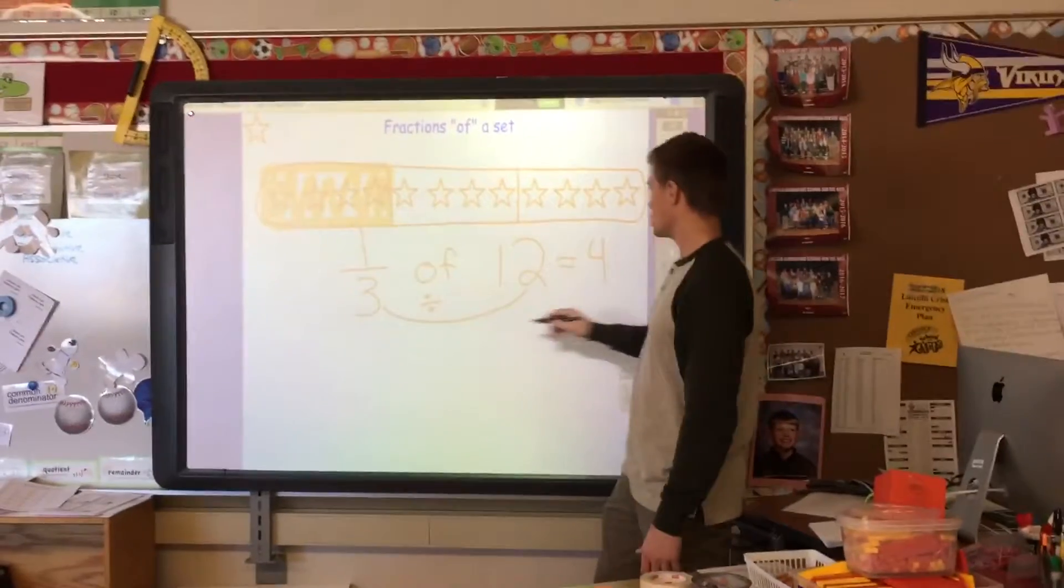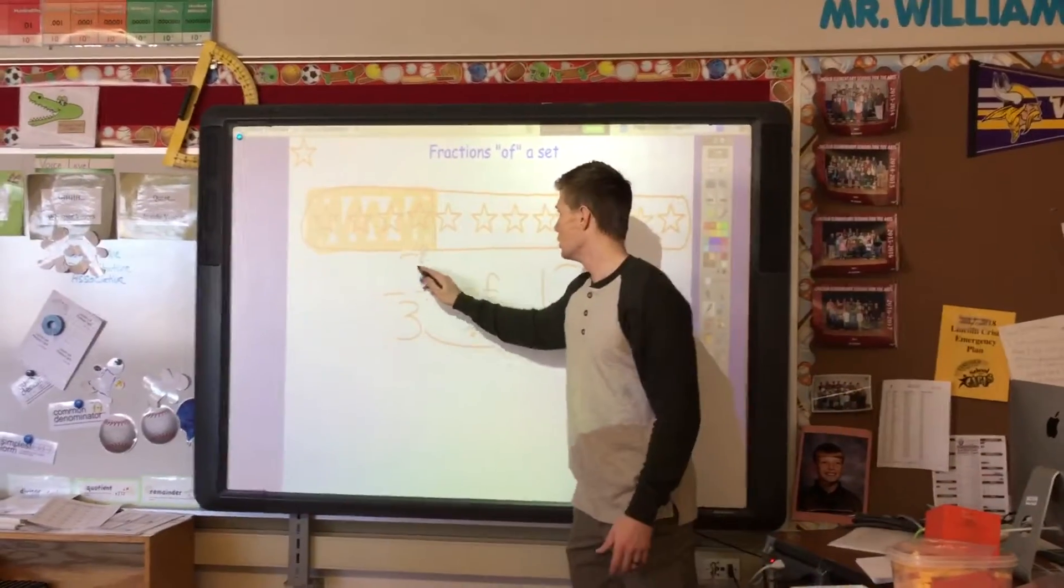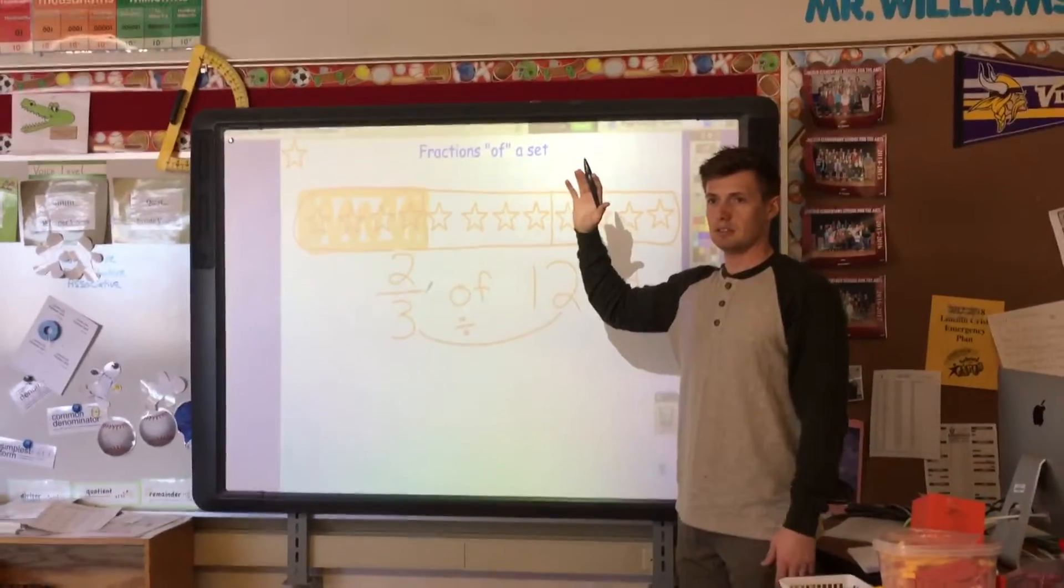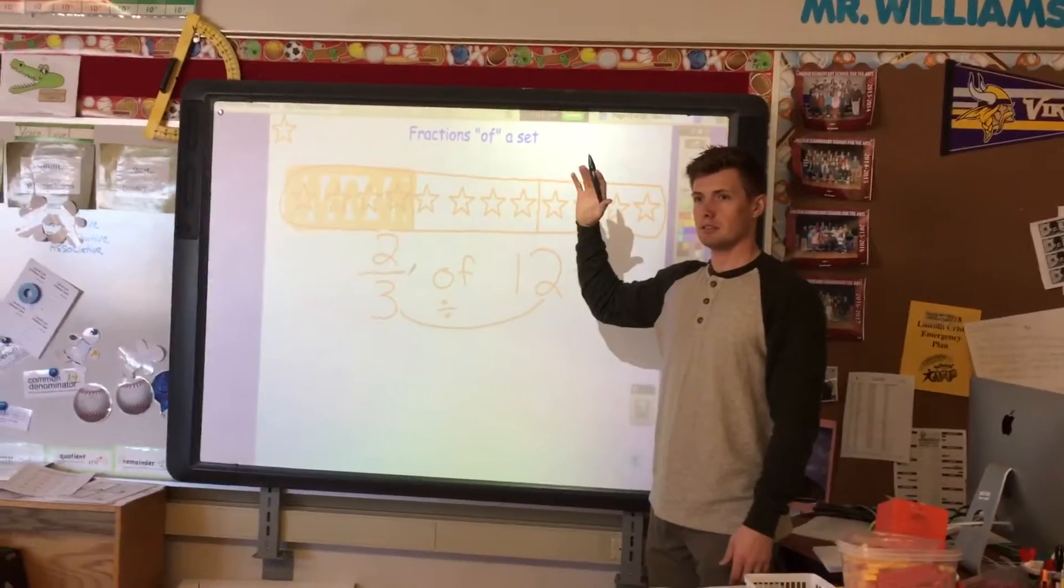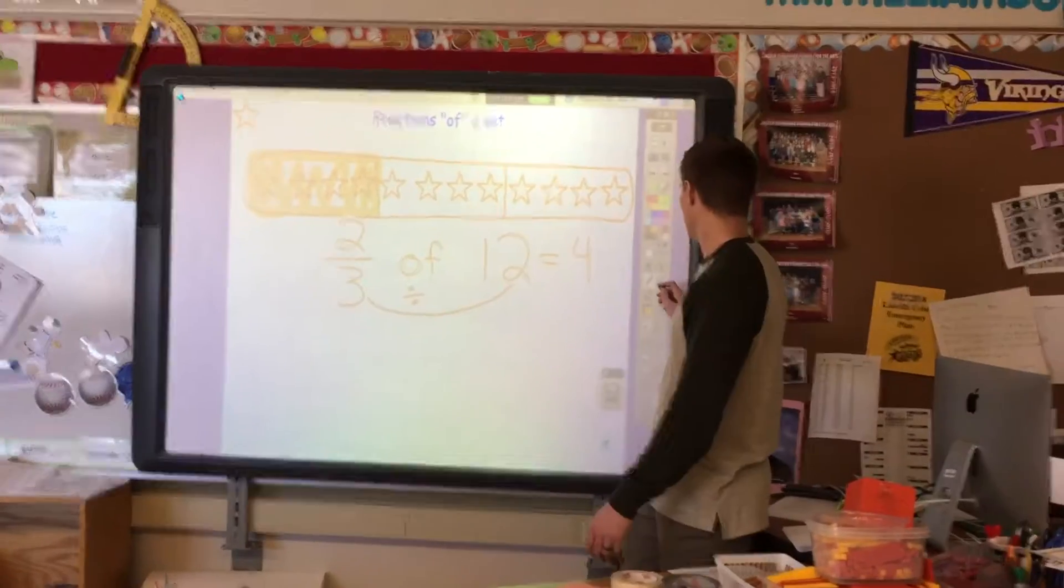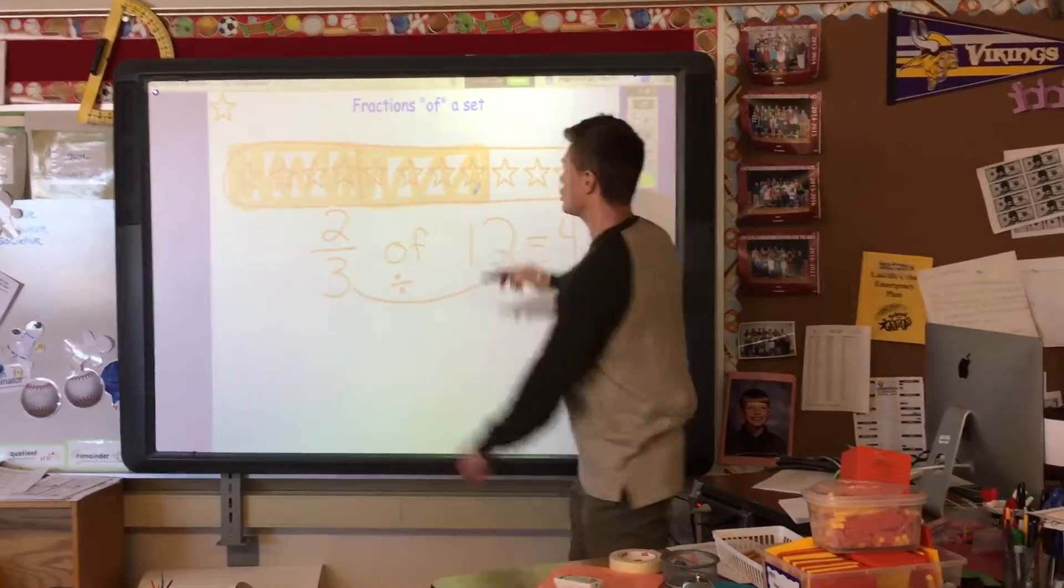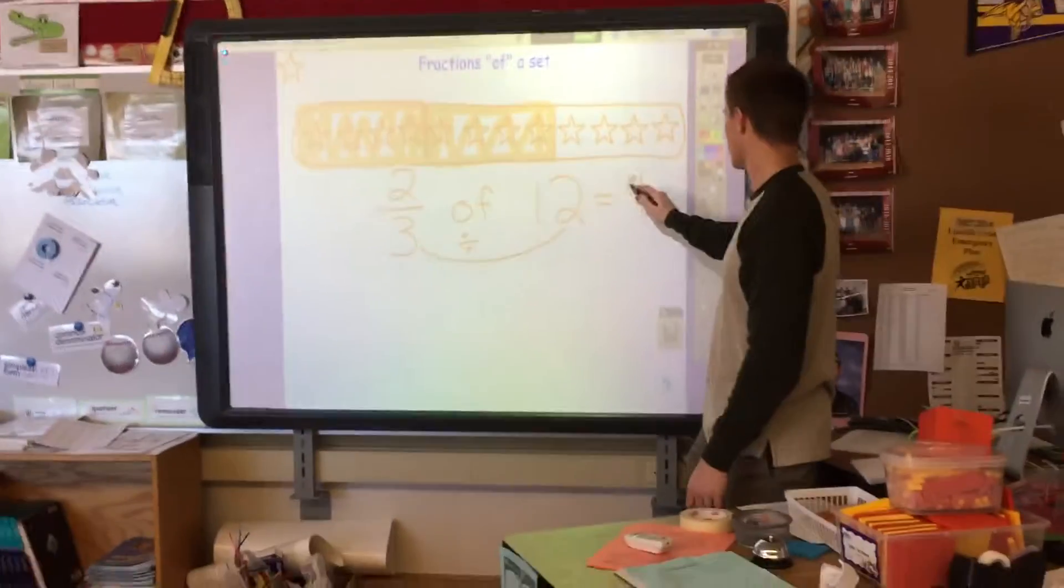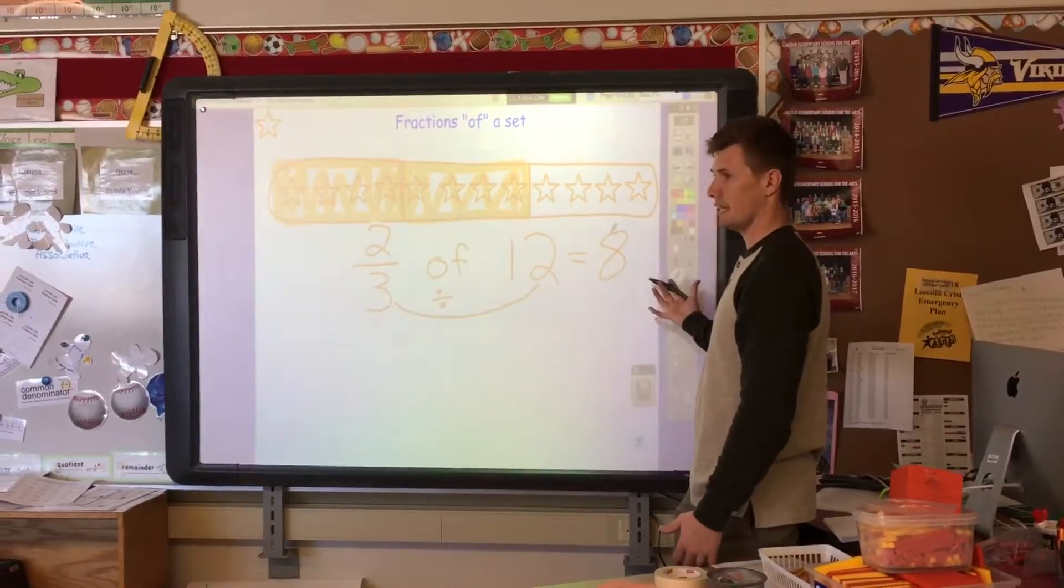So how would that change if I now ask for two-thirds? What would that be? I would have how many parts? Elliot? Eight. I would have now eight stars. So I'm now going to highlight or shade in two groups of four, which two groups of four is no longer just that, it would be eight. Two-thirds of twelve is eight.